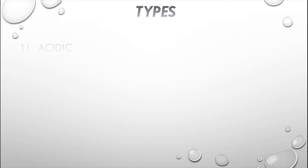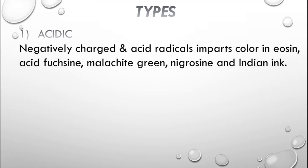Now let us see the types of stains. The first one is the acidic stain. These are negatively charged, and the acid radicals impart the color. Examples include eosin, acid fuchsin, malachite green, nigrosine, and India ink. These are the acidic ones, having a negative charge.